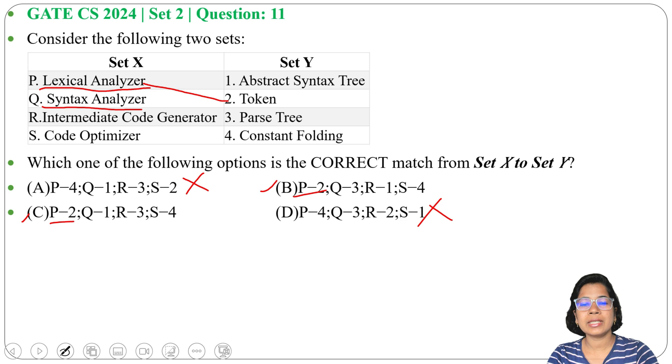Q is Syntax Analyzer. Syntax analyzer gives the parse tree, so Q matches with 3.